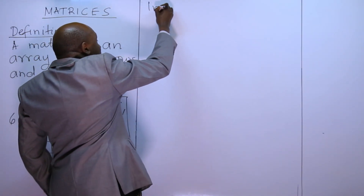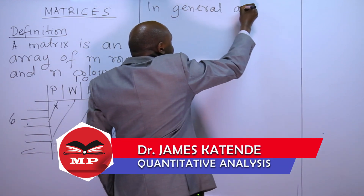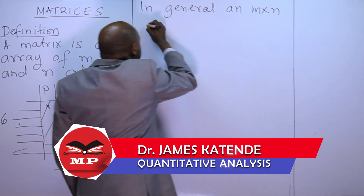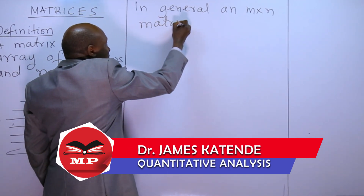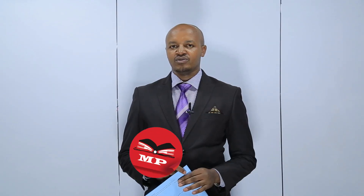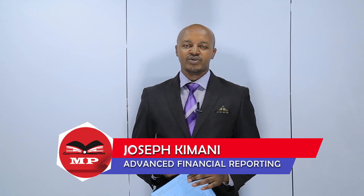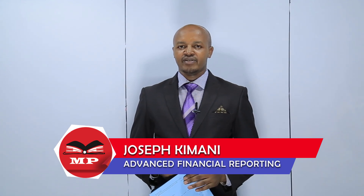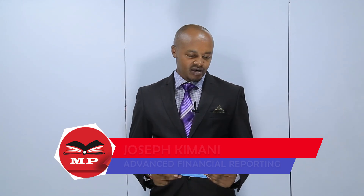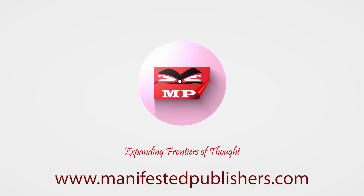In general, first of all, an A by N matrix is represented. And I want us to look at the paper which was done in November 2018, Advanced Financial Reporting. I wish that we, like Manifeste Publishers, keep expanding frontiers of knowledge.